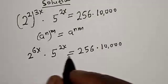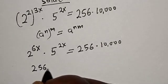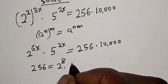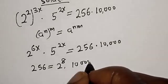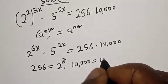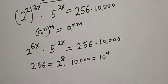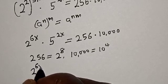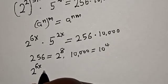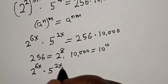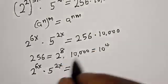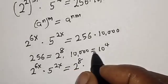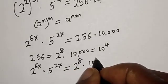Now take note of this: 2,560 is equal to 2 raised to power 8. Then 10,000 is equal to 10 raised to power 4. Now we have 2 raised to power 6s multiplied by 5 raised to power 2s is equal to 256, which is 2 raised to power 8, multiplied by 10,000. This is 10 raised to power 4.